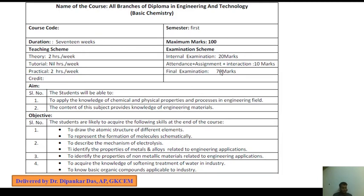Students will be able to apply the knowledge of Chemical and Physical Properties and Processes in the Engineering Field. The content of this subject provides knowledge of engineering materials. Objectives: students are expected to acquire the following skills by end of course — to draw atomic structure of different elements, represent formation of molecules schematically, describe the mechanism of electrolysis, identify properties of metals and alloys, identify properties of non-metallic materials, acquire knowledge of water softening treatment, and know basic organic compounds applicable to industry.